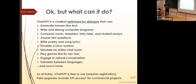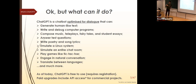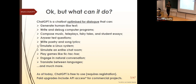What can it do? It can generate human-like text, write and debug computer programs in any language, compose music, teleplays, fairy tales, answer questions, write poetry, emulate a Linux system, play simple games, hold natural conversations, and translate between languages. It's free to use, requires registration and a phone number, and there are paid upgrades including API access to GPT-3.5.